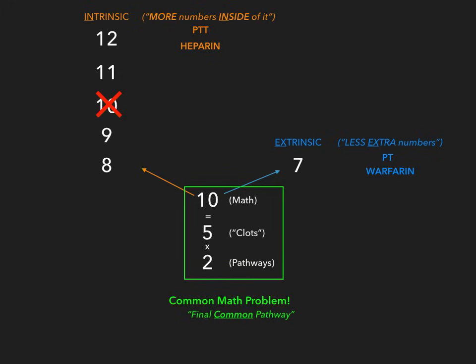In summary: we started with the number 2 because there are two pathways, multiplied by 5 for the five letters in 'CLOTS,' giving us 10 — the final common pathway affecting both intrinsic and extrinsic pathways if disrupted. We counted down from 12 to 8 on the orange intrinsic side, crossing out 10. The intrinsic pathway has more numbers, so PTT tests it; PT tests the extrinsic pathway. Factor 7 alone makes up the extrinsic pathway, placed on the right because there was no room on the left.